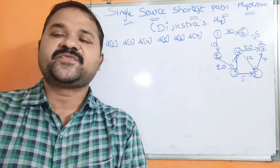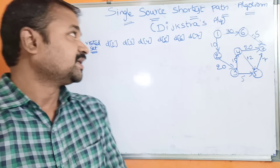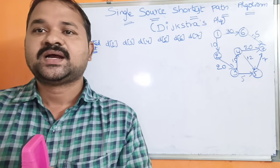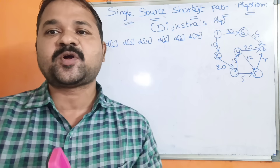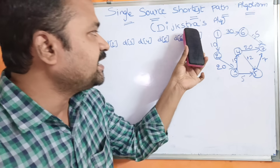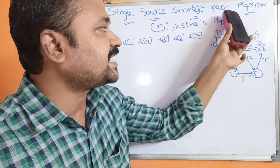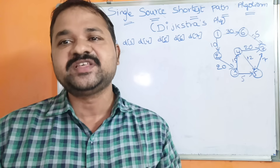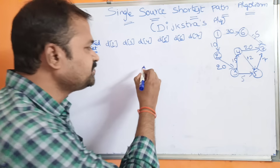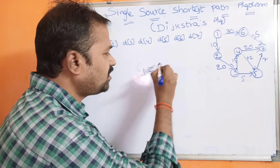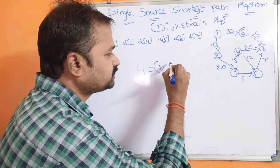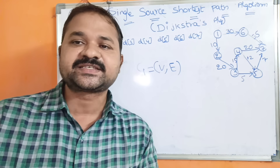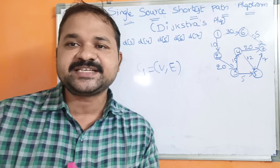In this video, we are going to discuss about the single source shortest path algorithm. Here, in order to solve this problem, we are using an algorithm called Dijkstra's algorithm. Let us see what is the aim of this algorithm. Let us assume that we have a graph G = (V, E), where V means set of vertices and E means set of edges.